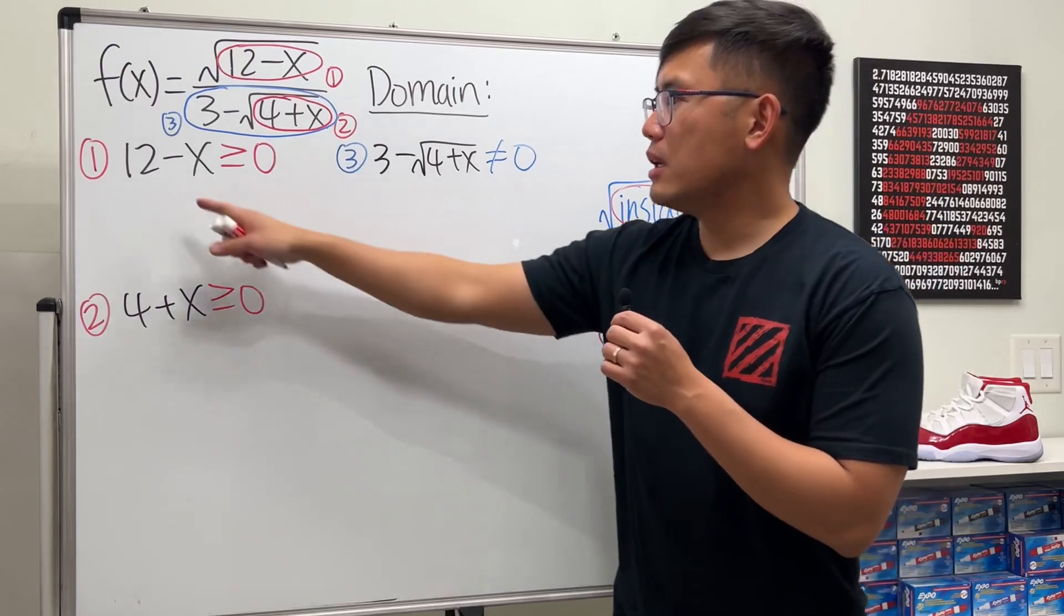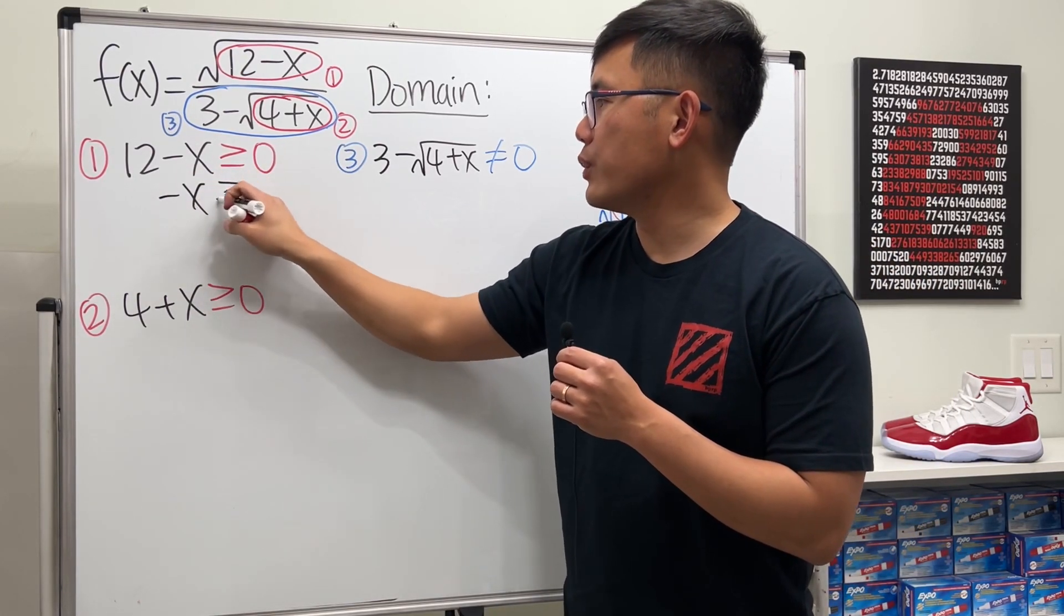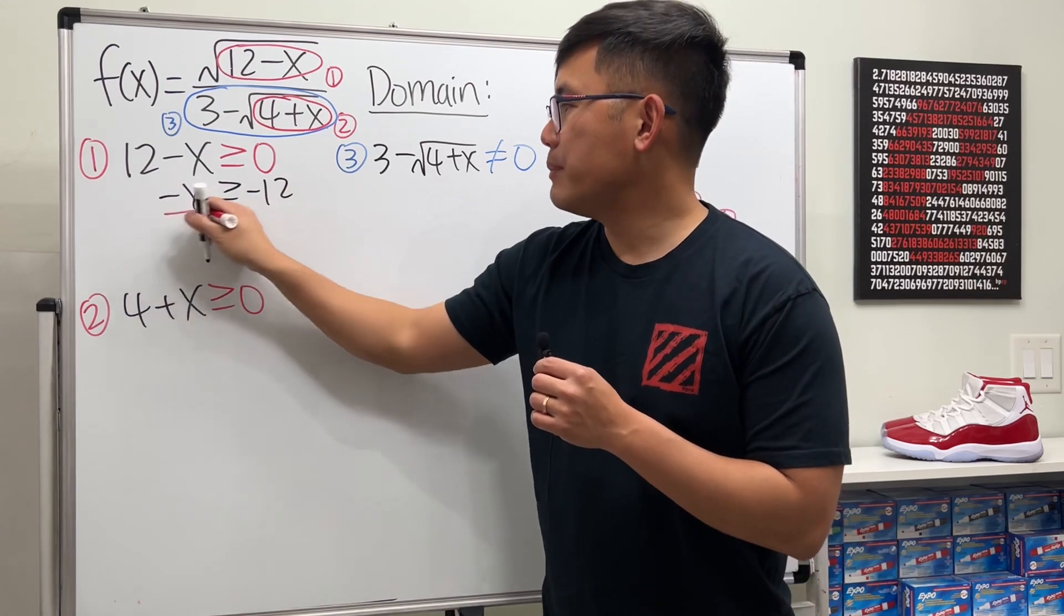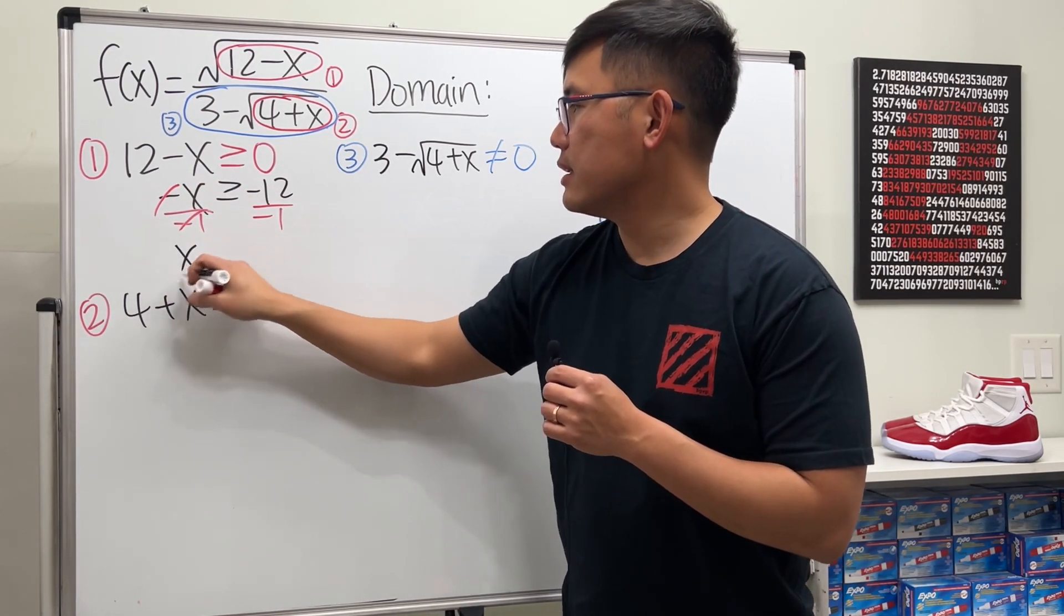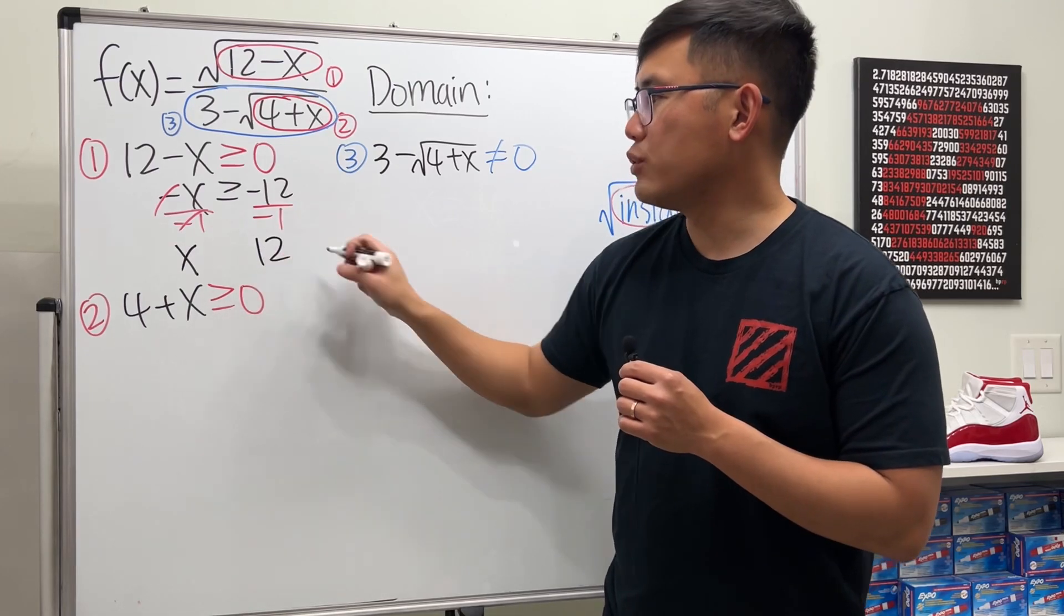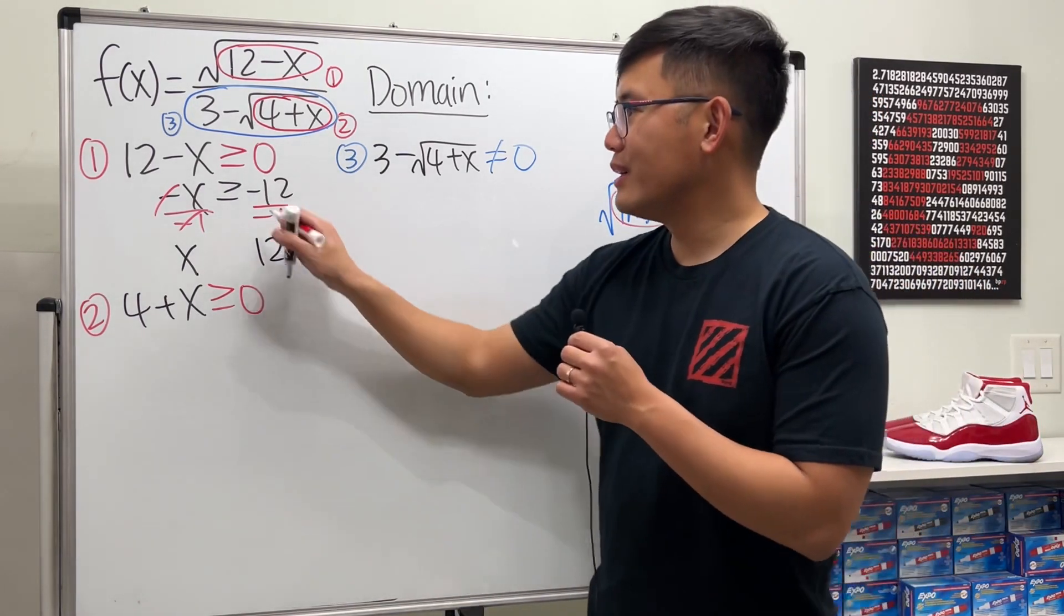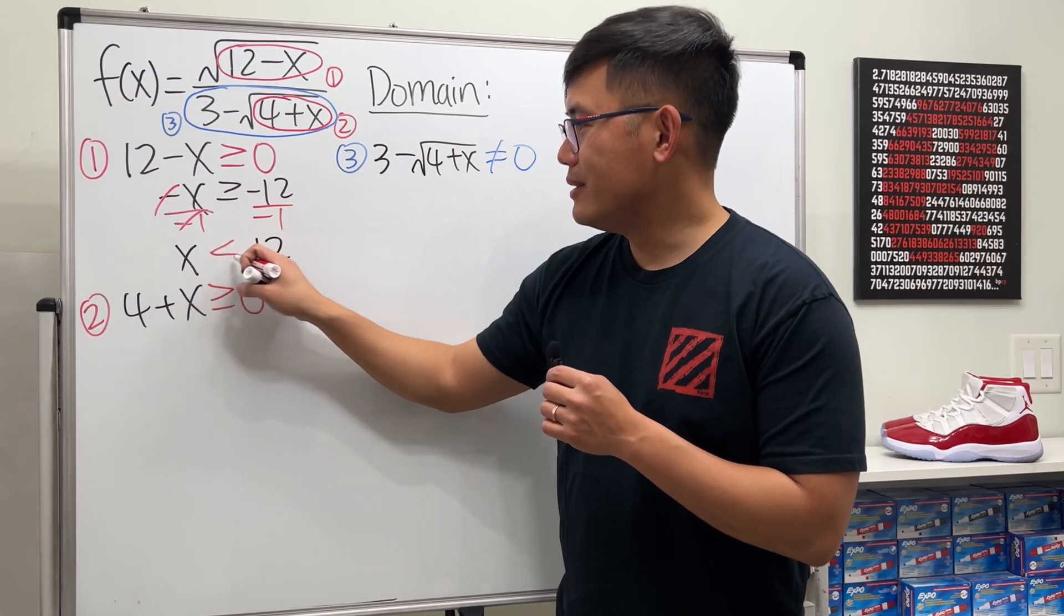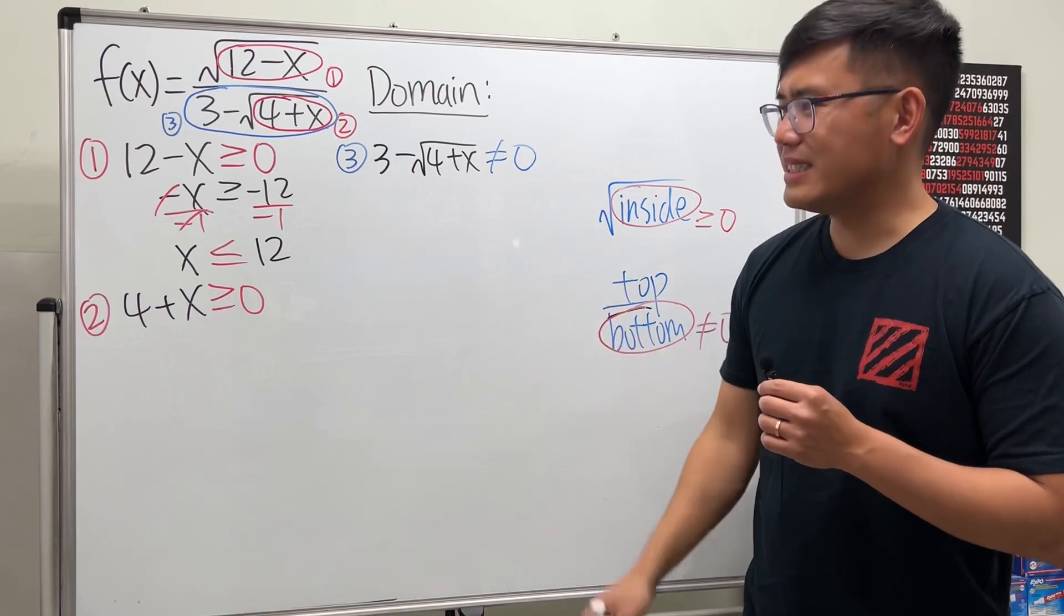Right here, move the 12 to the other side, so negative x is greater than or equal to negative 12. Divide both sides by negative 1, cancel x, and right here we get positive 12. But we divide both sides by a negative number, so make sure you remember to switch the inequality symbol. x is less than or equal to 12.